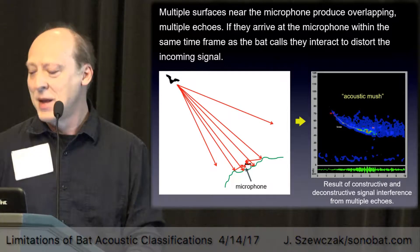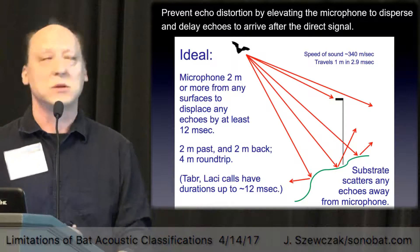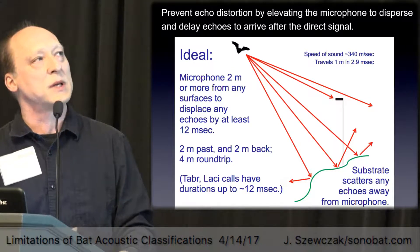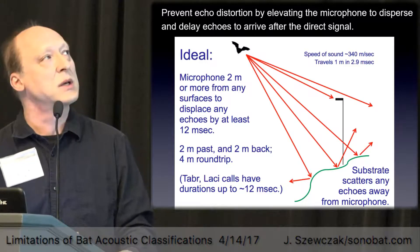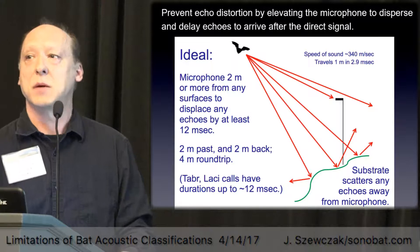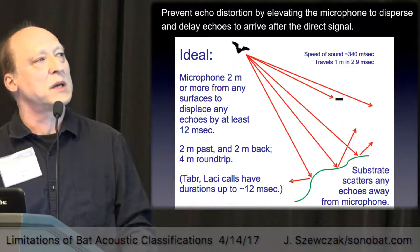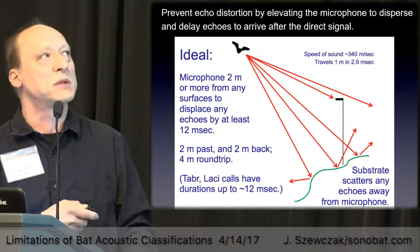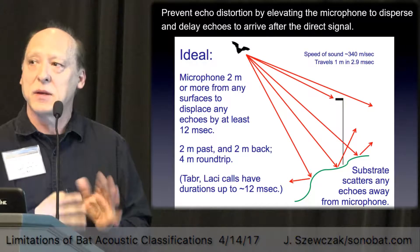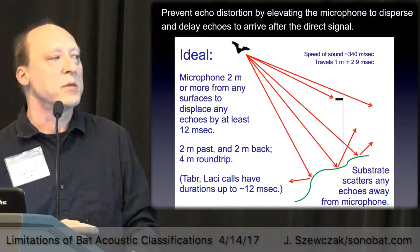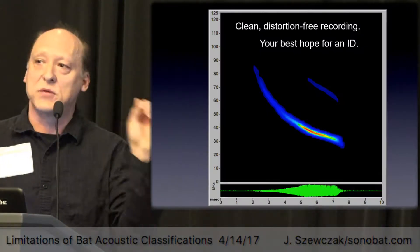The way to prevent this is to get your microphone up away from the ground. Sound travels at 340 meters per second, meaning it travels one meter in about 2.9 milliseconds. If you get your microphone just two meters away from any surface - the more the better - you give it at least 12 milliseconds before any echoes could arrive. That gives time for the direct signal to reach your microphone and be recorded without interference from constructive and destructive echoes from other surfaces.